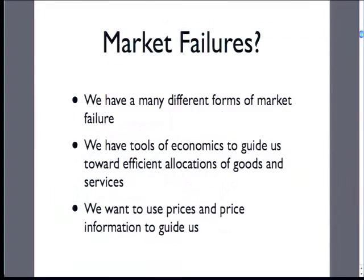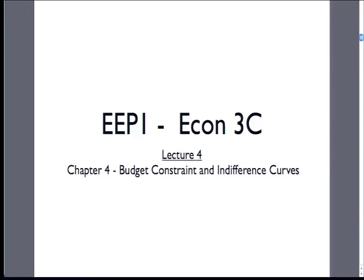Summing up, there's a whole list of different types of market failures. We start in Econ 1 with assumptions about perfect markets, but environmental economics looks at these market failures. We use the tools of economics to think about how to get to efficient outcomes — outcomes that take the least resources but make people the best off. We want to use price information as a way to guide efficient regulation, because prices carry a lot of information.